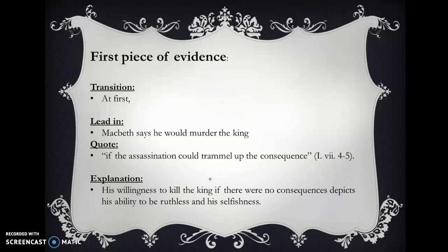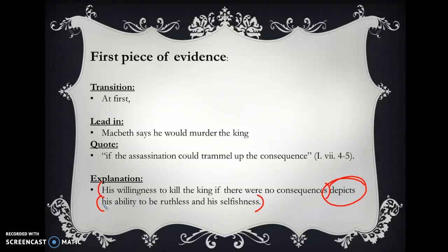We then explain our quote, and when we explain we want good idea development. We do not want to say 'this quote shows.' We want to restate the quote — 'his willingness to kill the king if there were no consequences' — stated in another way. Then we need a good verb: not 'this quote shows,' but the restatement 'depicts.' Then state what it shows: it depicts his ability to be ruthless and his selfishness. Those are our three parts of explanation, which is very important in idea development.